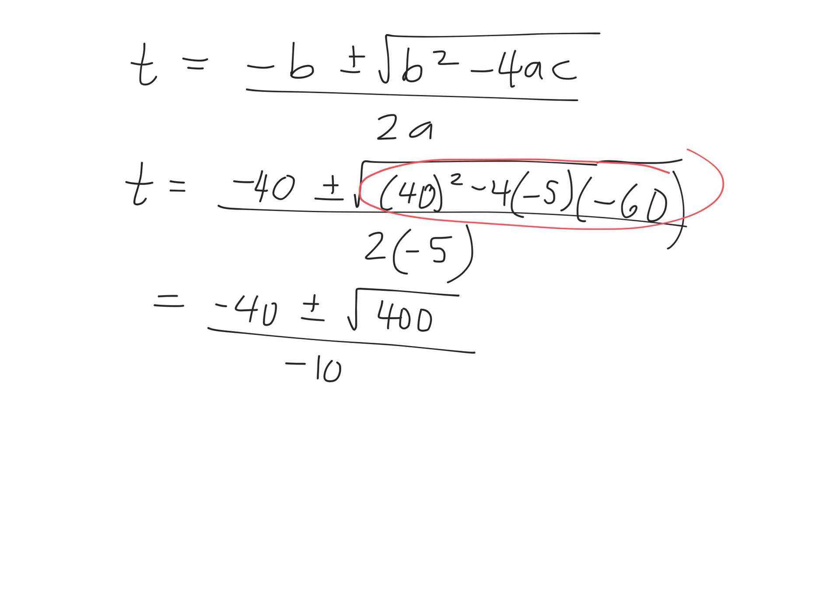So after two values of time, the rocket is at 60 meters. Think about it. A parabola is symmetrical. Okay, we're going to talk about this once you're done solving it.